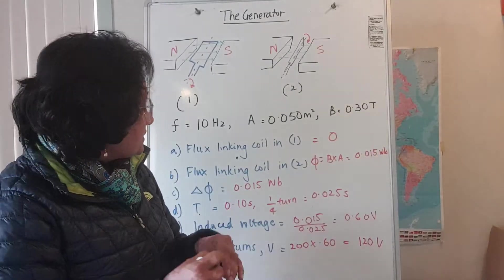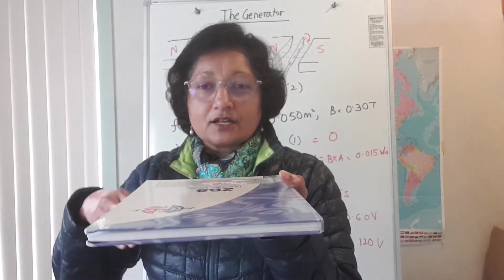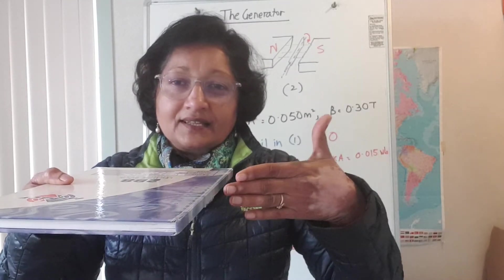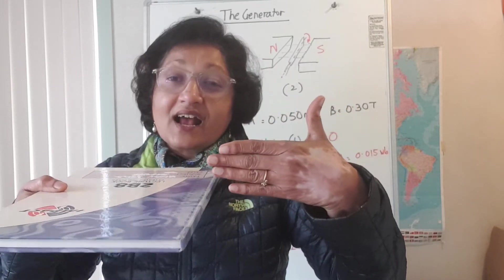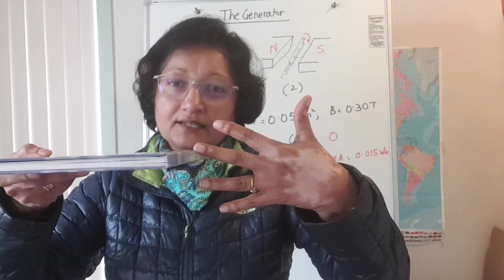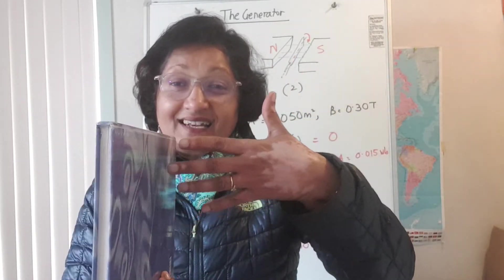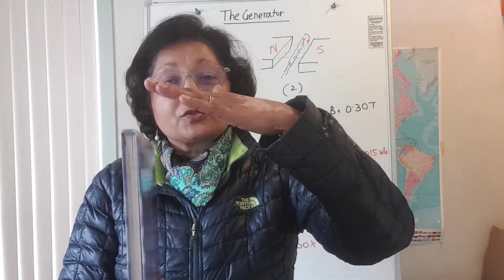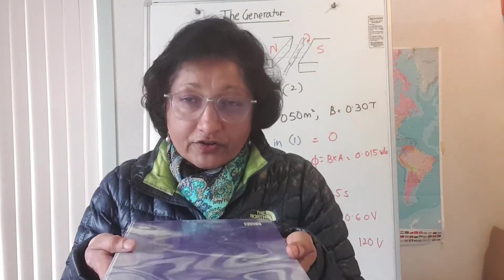That's how you solve problems on the generator. Now, why is maximum voltage induced when the plane of the coil is parallel to the lines of flux? It's to do with how the sides of the coil are moving — the sides are moving at right angles to the lines and cutting at maximum rate. However, when the coil is in the vertical position, the movement is parallel to the lines of flux, so there is no voltage induced.